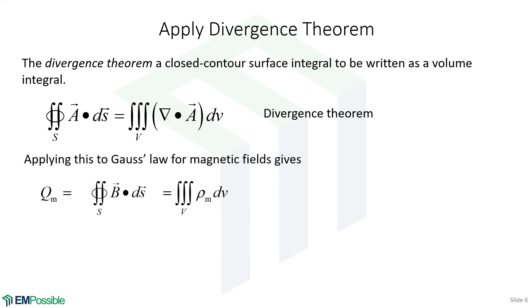So here I've written Gauss's law for magnetic fields, pretending as if there is magnetic charge. So total magnetic charge is the same thing as integrating the flux around some surface or integrating the magnetic charge density throughout a volume. Well, sitting here is a closed contour surface integral where we're integrating flux, and the divergence theorem allows us to write that as a volume integral integrating divergence. So we simply replace this one integral with a volume integral integrating the divergence of the magnetic field.